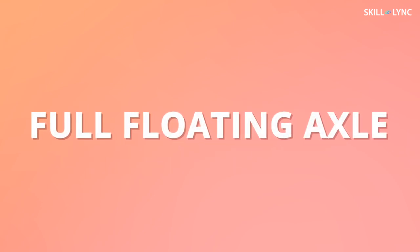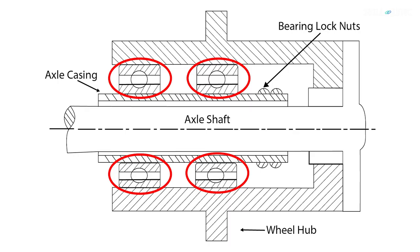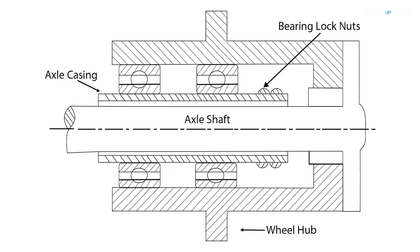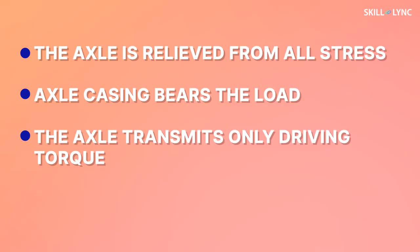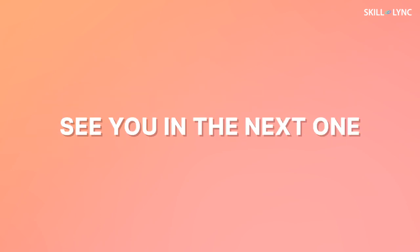The last type is the full floating axle. In this type, the bearing is placed in between the wheel hub and the axle casing. The axle is not supported by the bearing. Instead, the axle is connected to the wheel with the help of a key, bolt, or nut. Here, the axle is relieved from all stress. Instead, the load acts on the axle casing. The axle transmits only the driving torque.